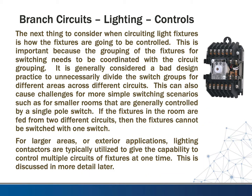The next consideration when circuiting light fixtures is how the fixtures will be controlled. The grouping of fixtures for switching must be coordinated with the circuit grouping. It is generally bad design practice to divide switch groups for different areas across different circuits, which can cause challenges for simple switching scenarios — if fixtures in a room are fed from two different circuits, they cannot be switched with a single switch. For larger areas or exterior applications, lighting contactors are typically utilized to control multiple circuits at once. A lighting contactor can run up to six circuits and can be controlled by a single-pole switch, an electrical impulse, or a signal from a building automation system.